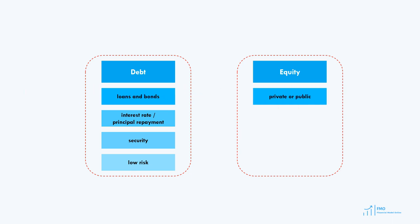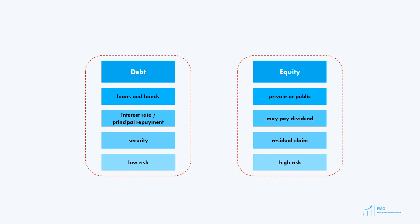Equity can be private or public. Public equity means shares in a public company, which are traded on the stock exchange. Private equity is equity investment into a private company. Companies may pay dividends to the shareholders, but this is at the discretion of the management — depending on what the company management thinks is best for the company, dividends will be paid or not. Equity investors hold a residual claim to the company's assets, which means that if the company goes bankrupt and sells its assets, the creditors and others are paid first. Therefore, equity investments are regarded as high-risk investments.